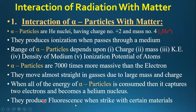Alpha particles produce fluorescence when they strike certain materials. Fluorescence is a phenomenon where a charged particle striking a specific material causes the emission of a small amount of light.